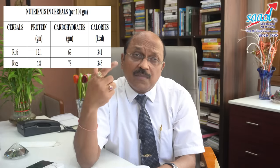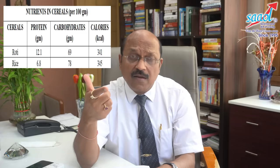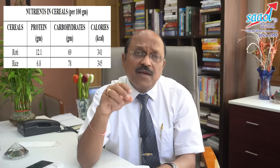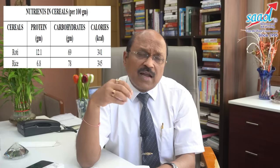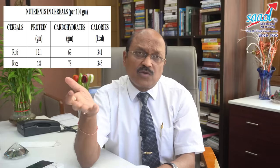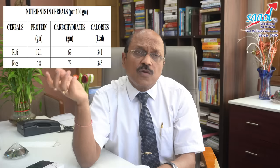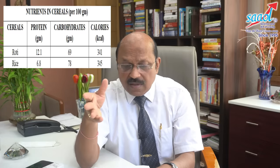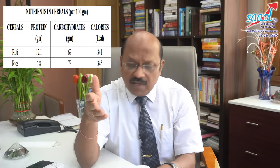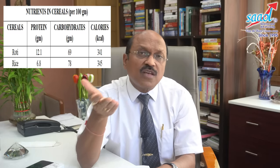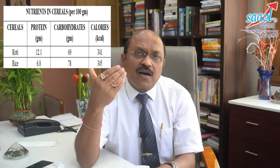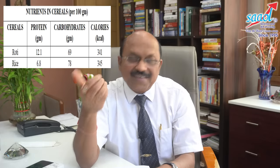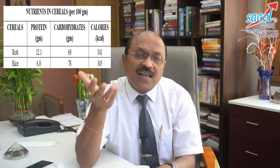Carbohydrate is more in rice. Protein is less than 4 grams in rice. Calorie-wise, rice is around 345 calories per 100 grams.